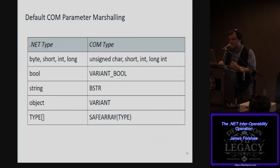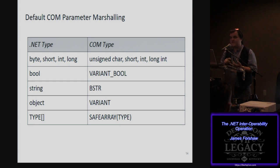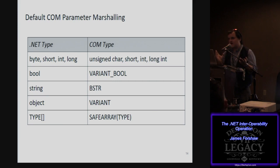When calling an object you need to do some marshalling, since .NET types aren't necessarily the same as COM types. Blittable types like bytes and ints go straight across between the managed and unmanaged world. But booleans end up being converted to a variant bool, which has the wonderful property of true being minus one. Strings go to BSTRs, which is a common counted string type in COM. Objects become variants, and type arrays become safe arrays of types.